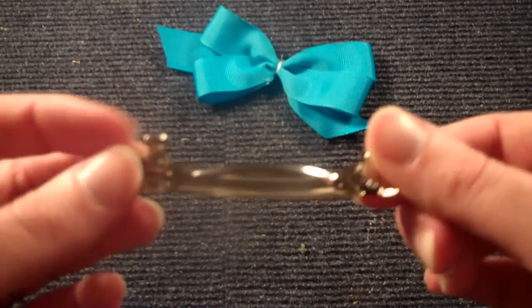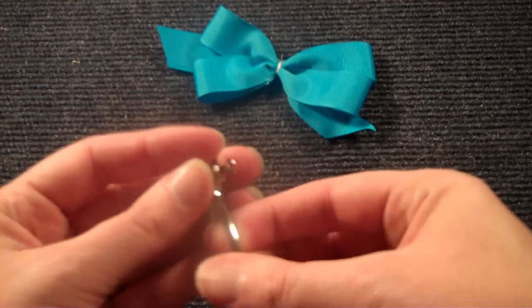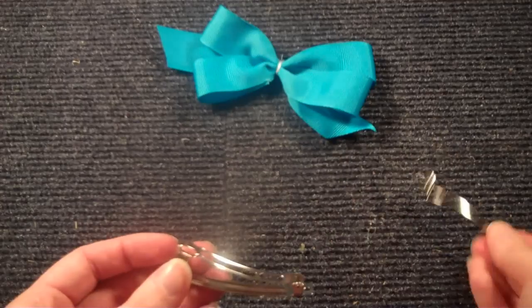The French barrette has this clasp in the middle. You're just going to take it out, it's very easy. Be careful though. Just slip it out and put it to the side.